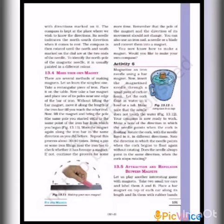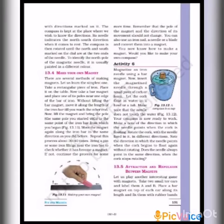Move the magnet again along the iron bar in the same direction as you did before. Repeat this process about 30 to 40 times. Bring a pin or some iron filings near the iron bar to check whether it has become a magnet. If not, continue the process for some more time. Remember that the pole of the magnet and the direction of its movement should not change.